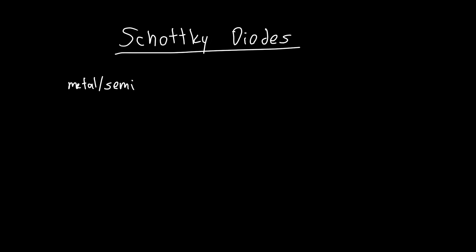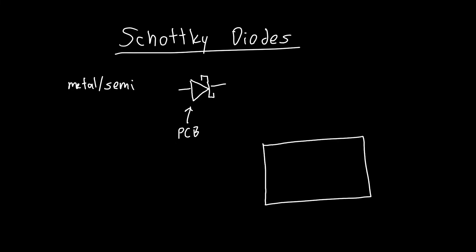Why do we care about Schottky diodes? Well, for one they're a useful circuit element — they're commonly used, this is their circuit symbol, in printed circuit board level circuit design. So they're important to understand for that reason, but I would argue the most important reason is the following.